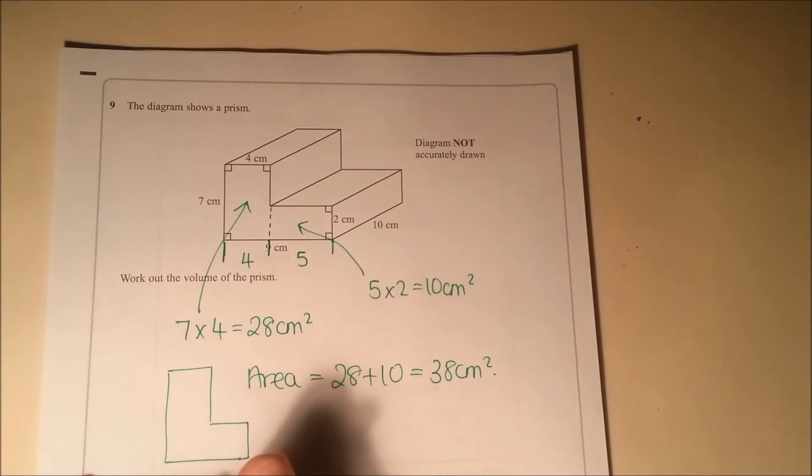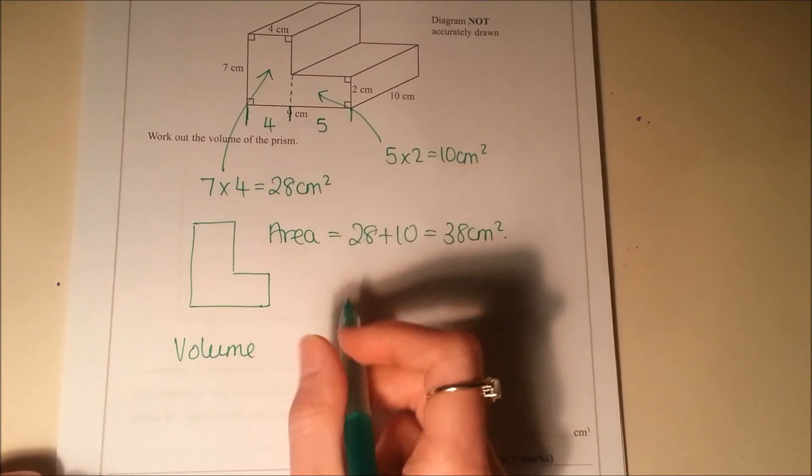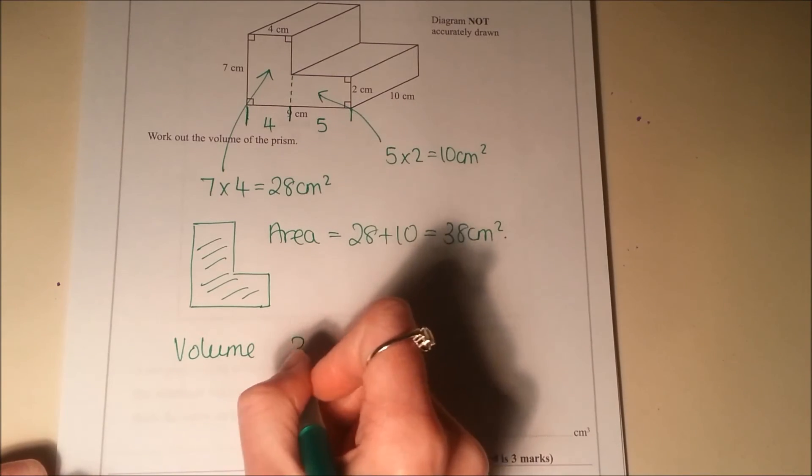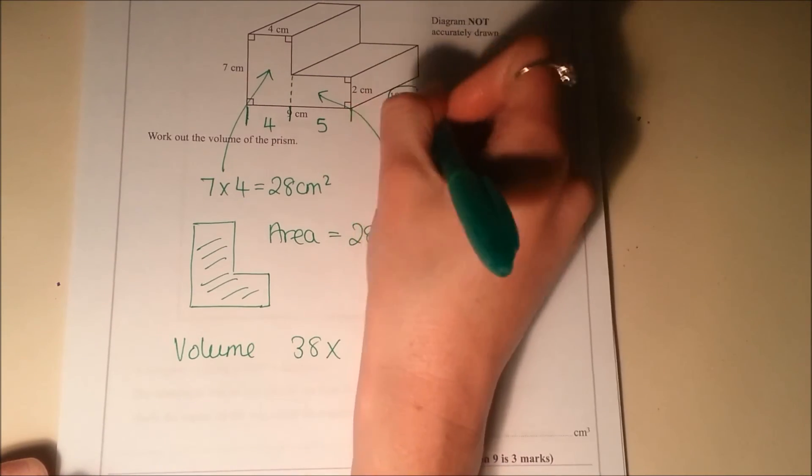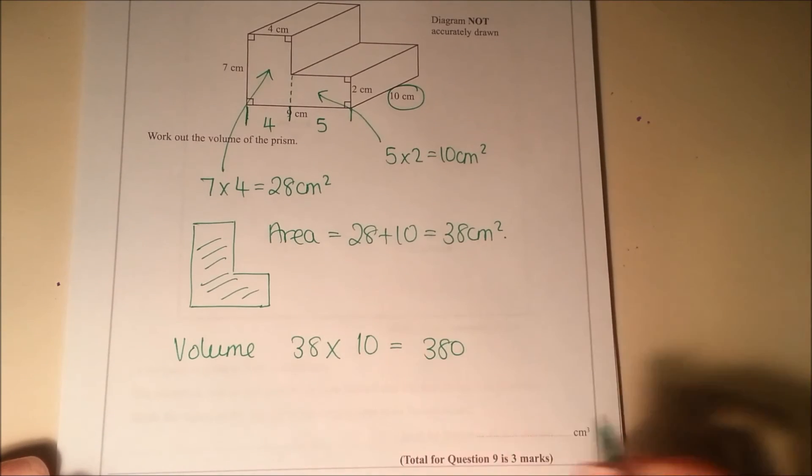If we want the volume of the prism all we need to do is multiply the total area there which is 38 by the length, so it's 380. So 380 centimetres cubed.